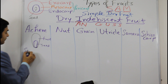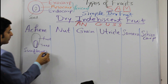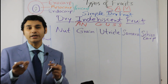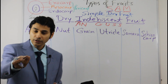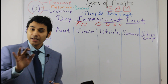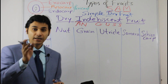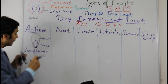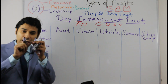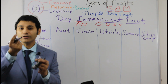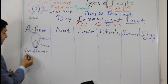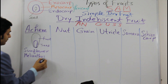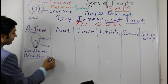An example of achene is sunflower. When you go to the market, you find sunflower seeds being sold — the trade name is 'sunflower seed'. Actually, it is not the seed; it is the fruit, specifically an achene. When you break this pericarp, you find the seed inside. The scientific name of sunflower is Helianthus annuus.